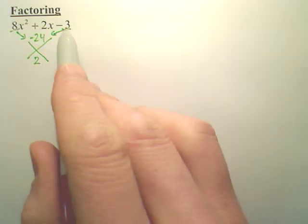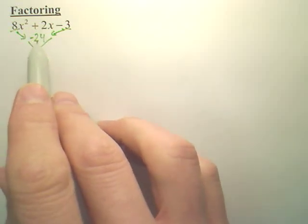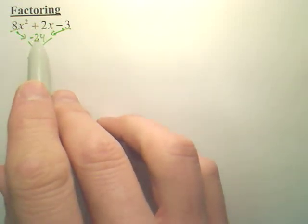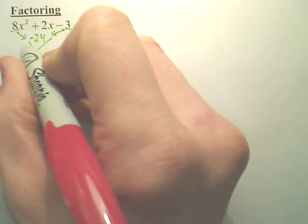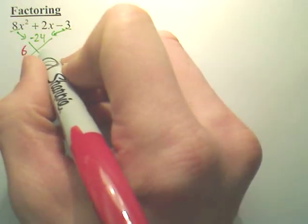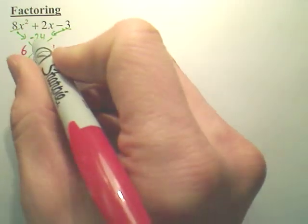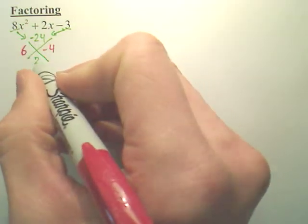Now, so again you take these two, multiply, this drops to the bottom. Then you go, what two numbers multiply to get this and add to get this? And if you do some problem solving, you'll notice that, oh, that'd be 6 and negative 4. 6 times negative 4 is negative 24. 6 plus negative 4 is 2.